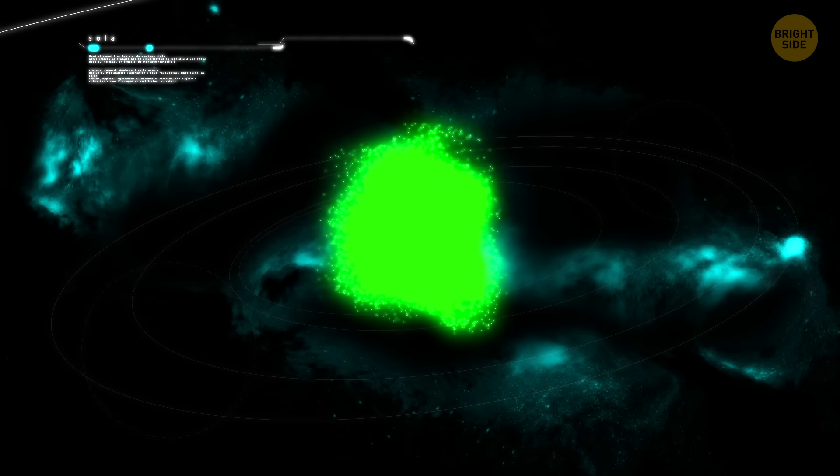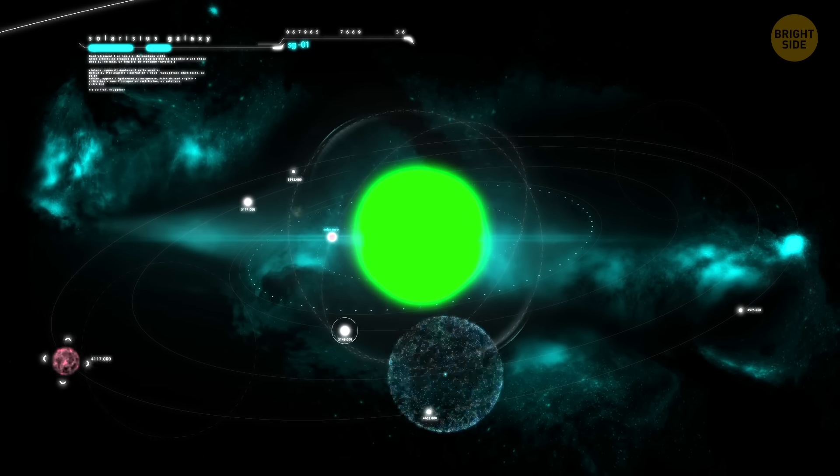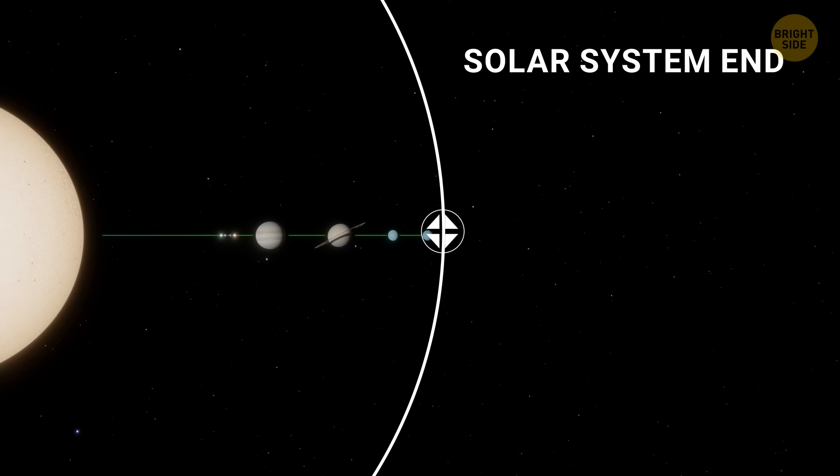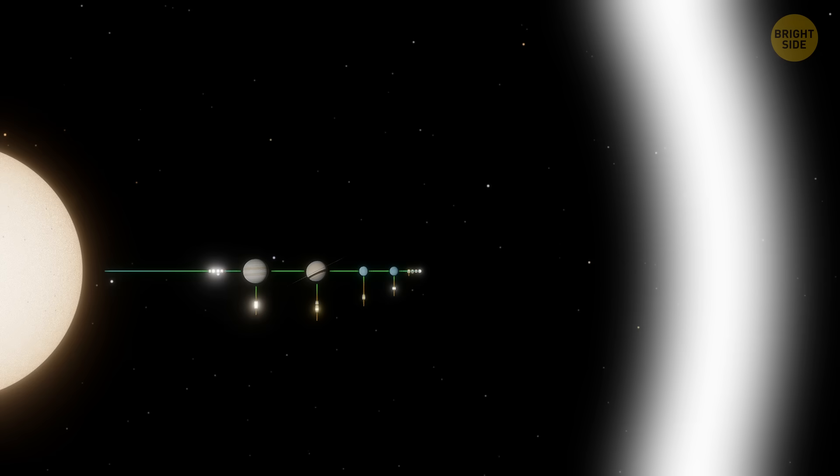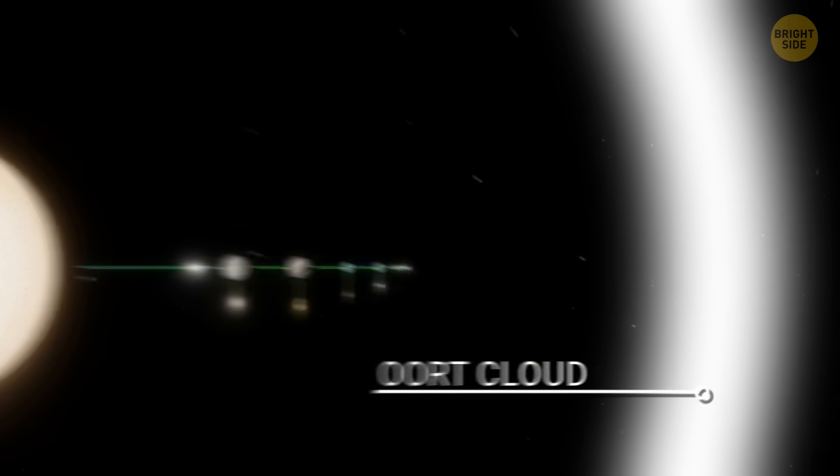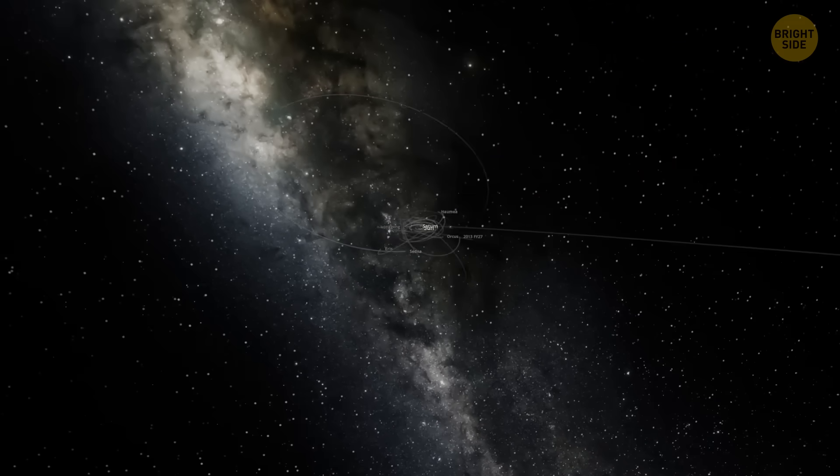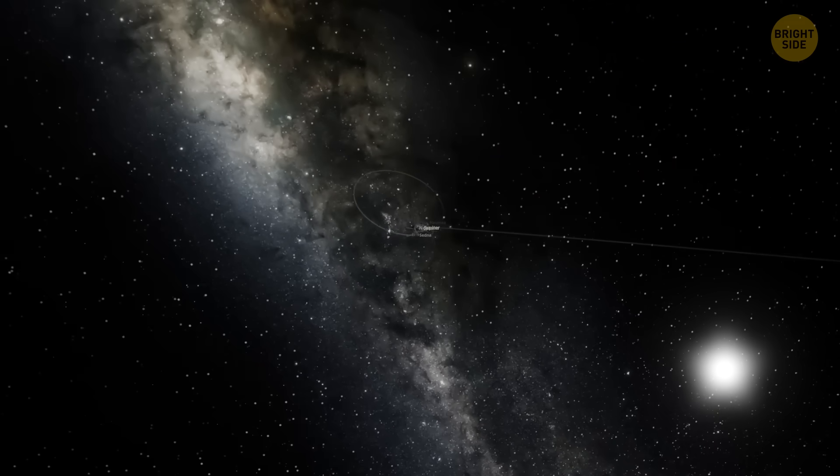Meanwhile, there are several ways to think about where the solar system ends. One way is to say it ends where the planets stop. Another way is connected to the Oort cloud, that's a giant group of icy objects far beyond the planets, the farthest region of the solar system. It is extremely distant, maybe a quarter to halfway to the nearest star.